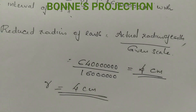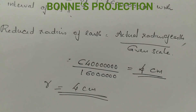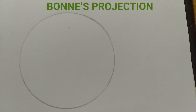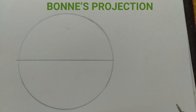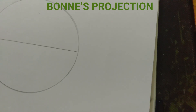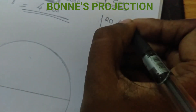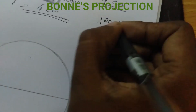For that step, we have to make a 4 centimeter circle. With 4 centimeters, we draw the circle. About the diameter, we will mark the intervals. We will make the latitudes and intervals.